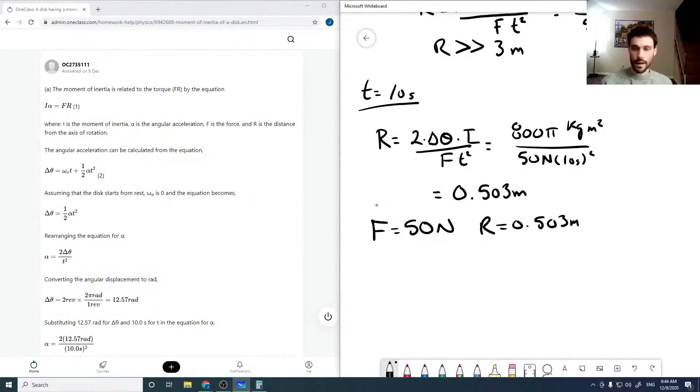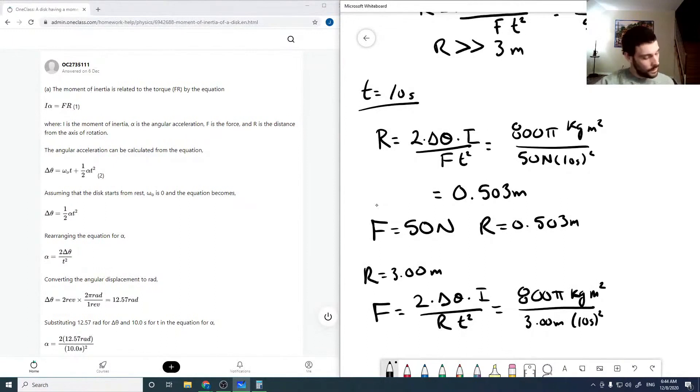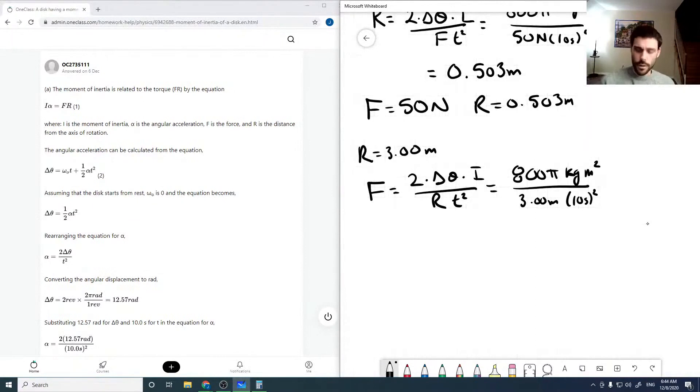Or if we pick an R of, say, three meters, then we can rearrange this for force, which would be 800 pi kilogram meters squared over three meters times 10 seconds squared, which comes out to be a force of 8.38 newtons. And so we have another pair.